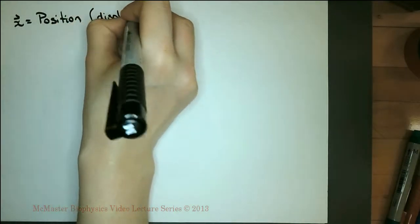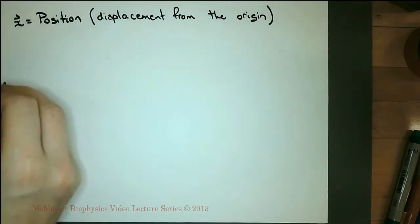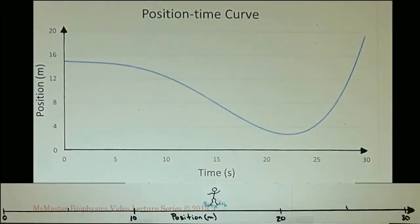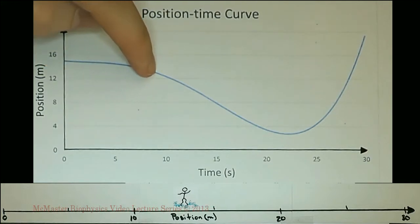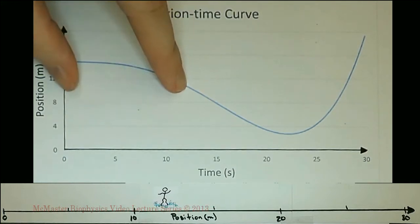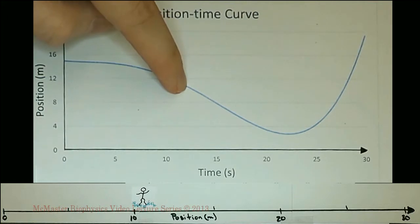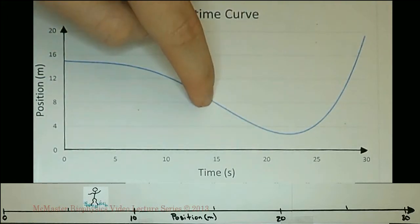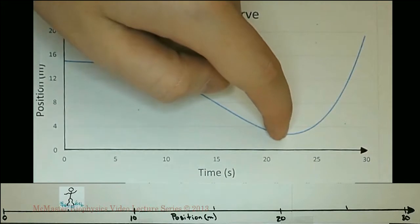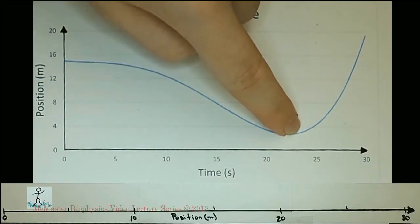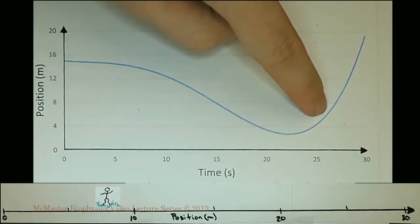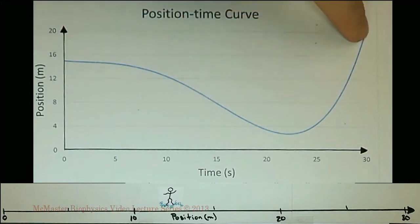The position of an object is its displacement from the origin. This is a position-time curve. From the curve, we see that the dancing man begins at positive 15 from the origin when time is zero. At first, he moves slowly towards the origin in the negative direction, then speeds up, then slows down. At about 23 seconds, he changes direction and begins to move in the positive direction, speeding up while heading in the positive direction.